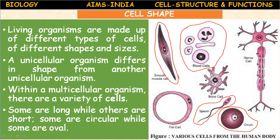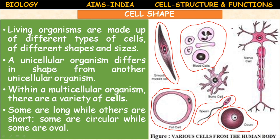A bone cell — osteocyte — the cells present in bone are of different shape. A fat cell — adipocyte — is also a different shape. So various cells from the human body are of different shapes and perform different functions.